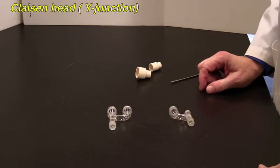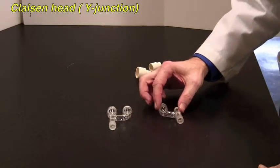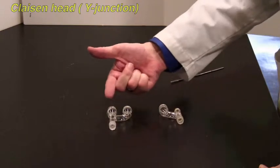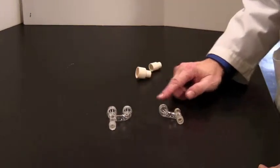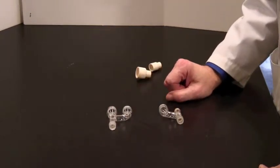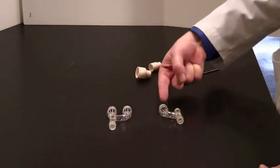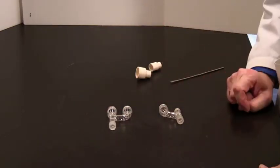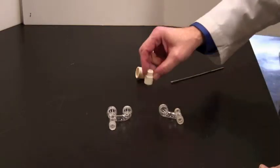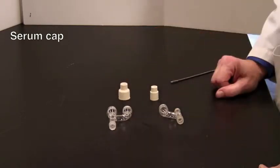You will also need a Claisen head. A Claisen head is a Y adapter, so it allows two channels into one. We have two different styles. It doesn't matter which one you have. One of them has two ground glass joints. The other one has only one ground glass joint and a threaded joint.